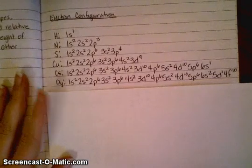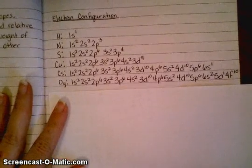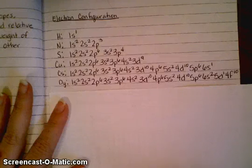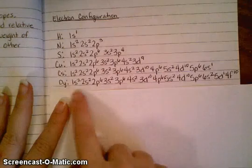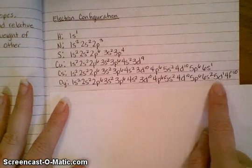In our electron configuration video, we learned how to actually write out the complete electron configuration for these elements. Now what we want to do is learn how to condense this so we don't have to write out something that's this long and make a mistake in route.